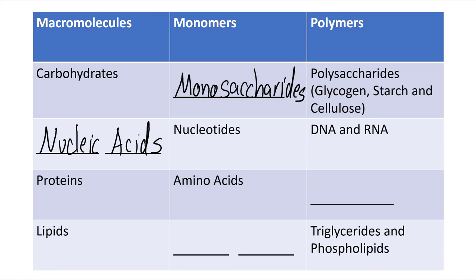For the nucleic acids, the monomers are the nucleotides, and the polymers will be our DNA and RNA.